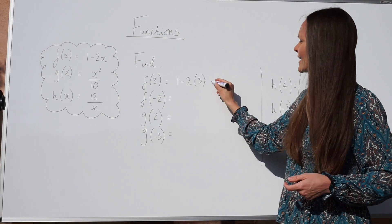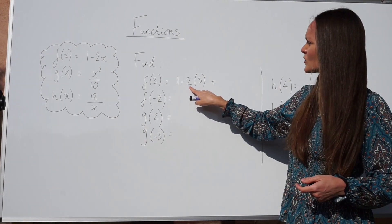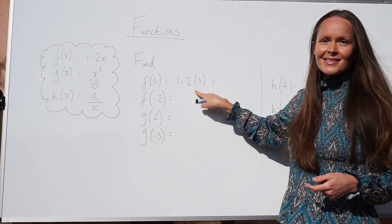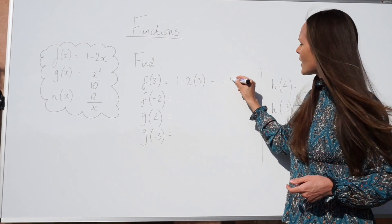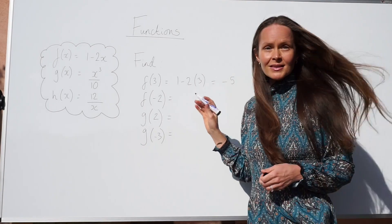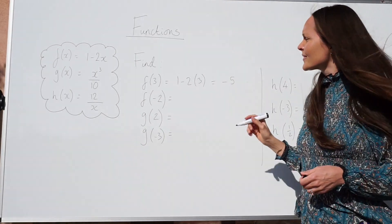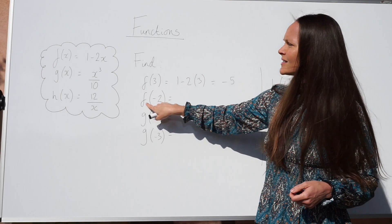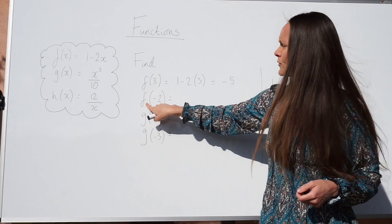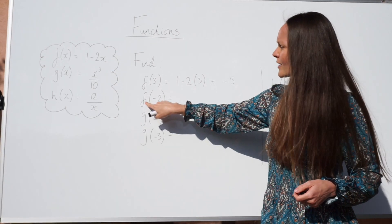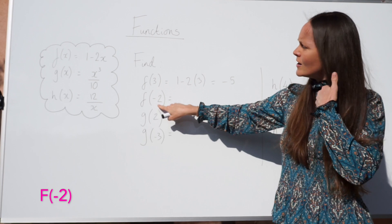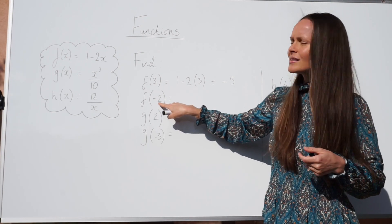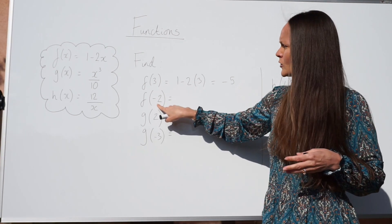So now we can calculate this: 1 minus 2 multiplied by 3 is 1 minus 6, which is negative 5. So that's the first one done. For the next one, we have to use the function f of x again because it says the letter f, and this time we have to work out f of negative 2. So this time we have to change the letter x to the number negative 2.